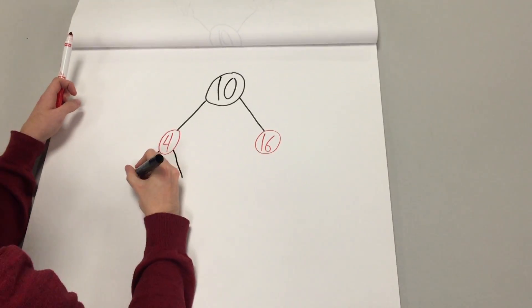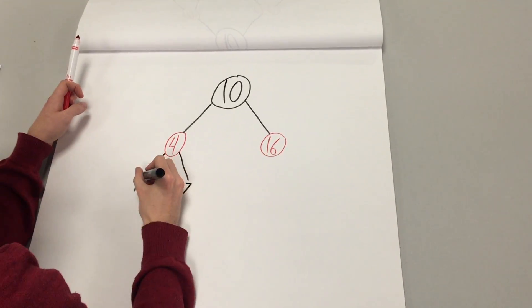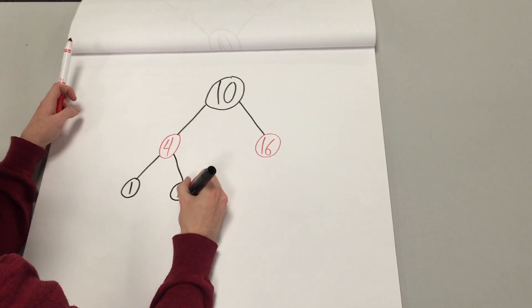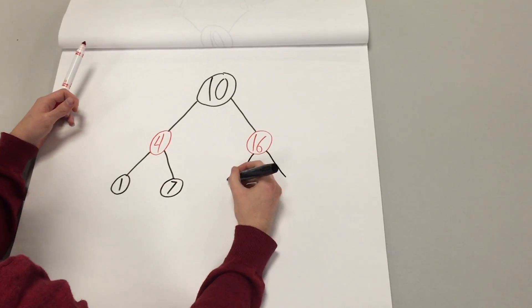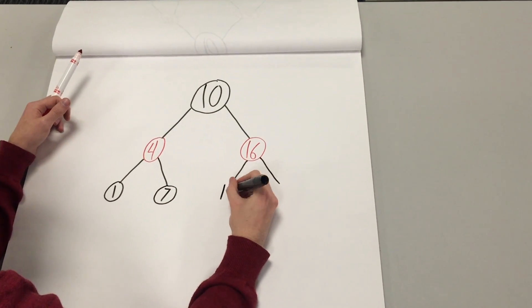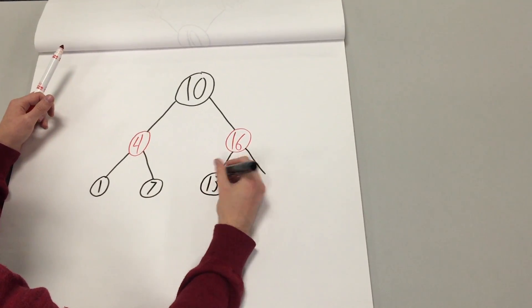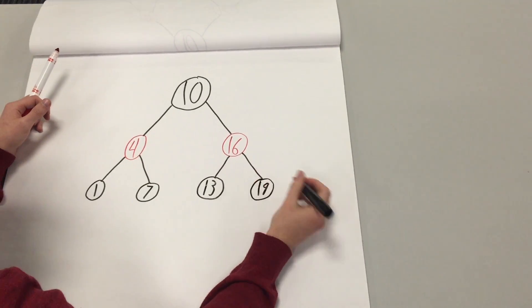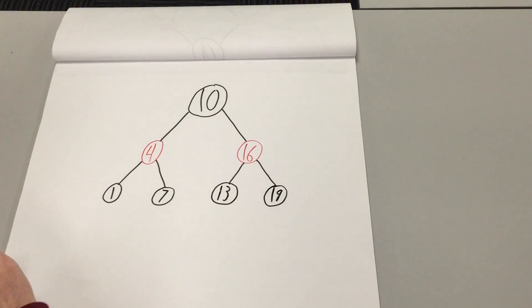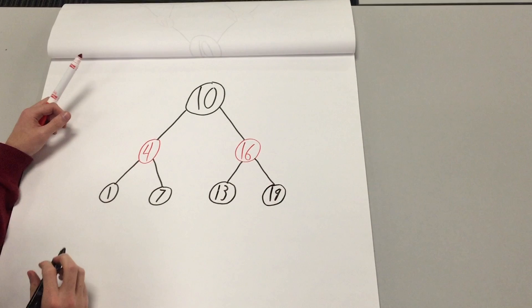Searching for an element in the tree is easy — it works exactly the same way as a binary tree. Insertion, however, is more difficult. We are going to show you how to rebalance a tree after you insert an element. Here is our initial red-black tree that satisfies all of the invariants, or properties.